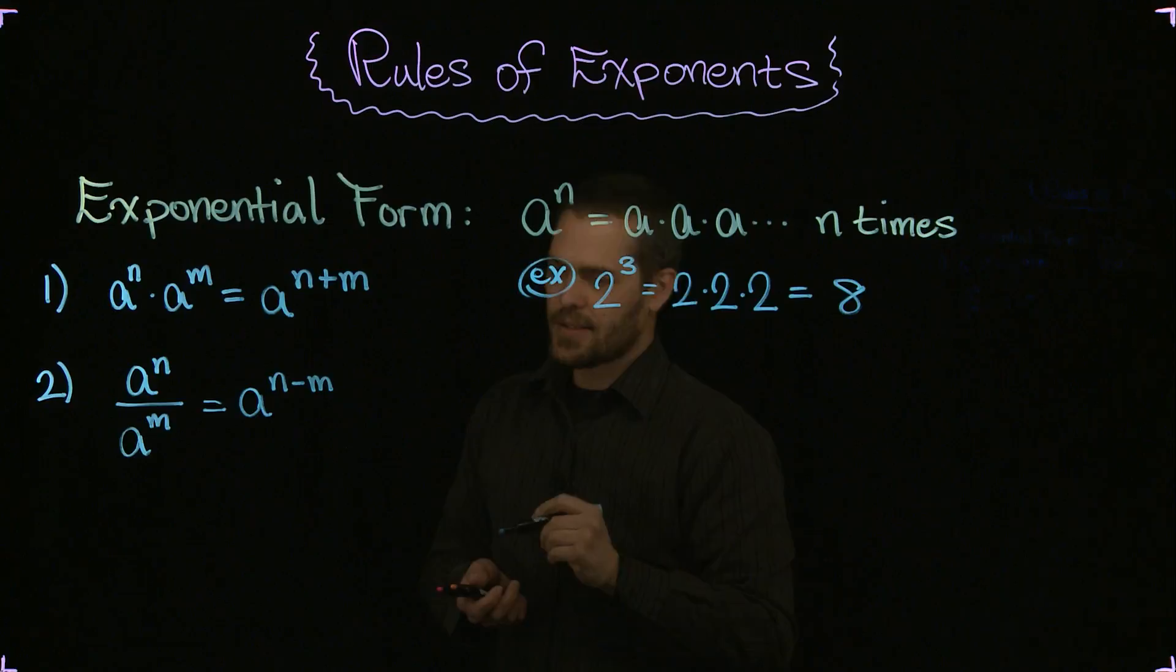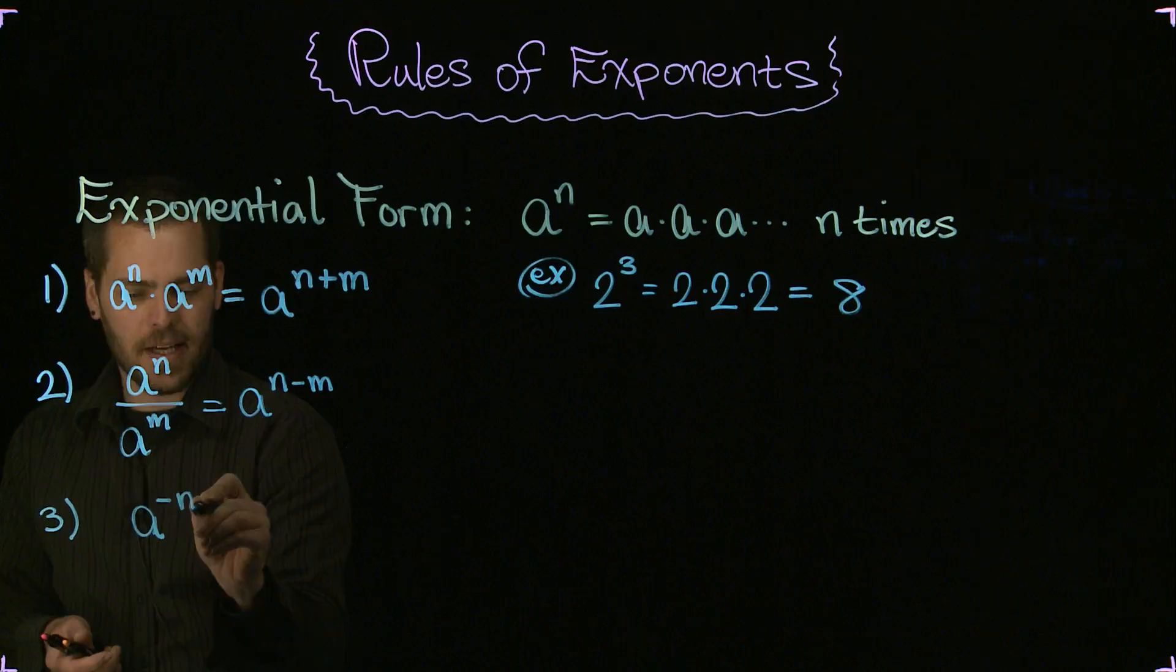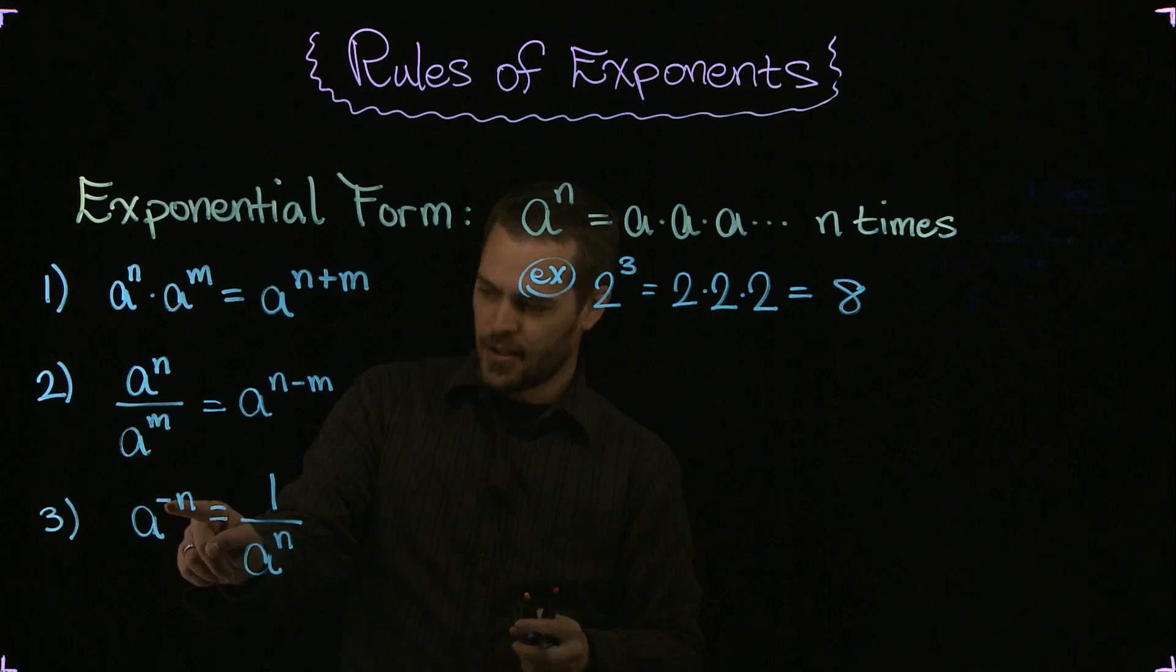And there are some interesting things that come as a result of this rule and I'll just state them as other rules. I could say it must be true also that a to the negative n power is equal to one over a to the n power.